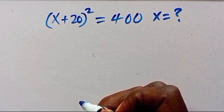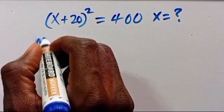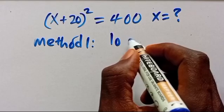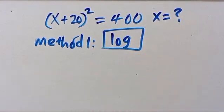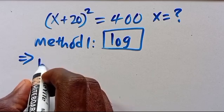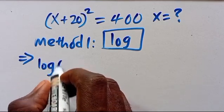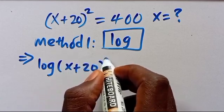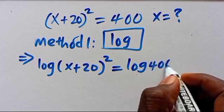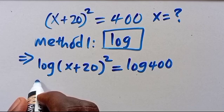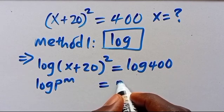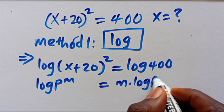Method 1: We want to introduce log to both sides of this expression. So we have log(x+20)² = log 400. We use the rule log p^m = m·log p.